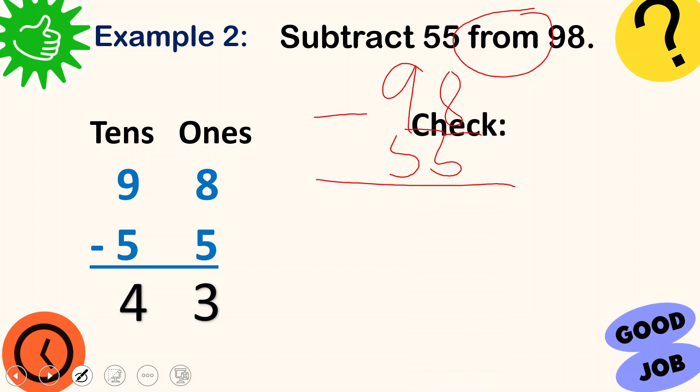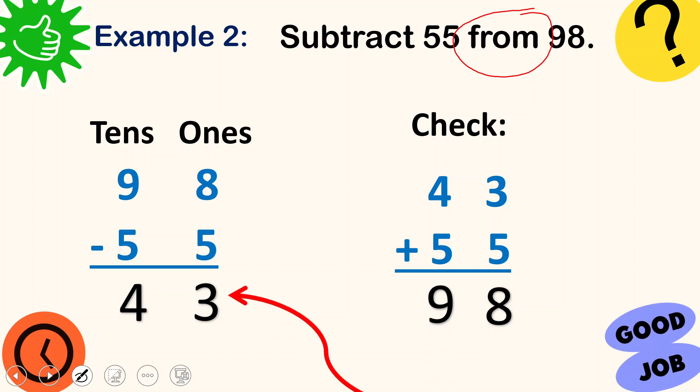So let's check if it's correct by doing the opposite operation. We will now be adding the difference and the subtrahend. So 3 plus 5 is 8. 4 plus 5 is 9. See? They are the same.